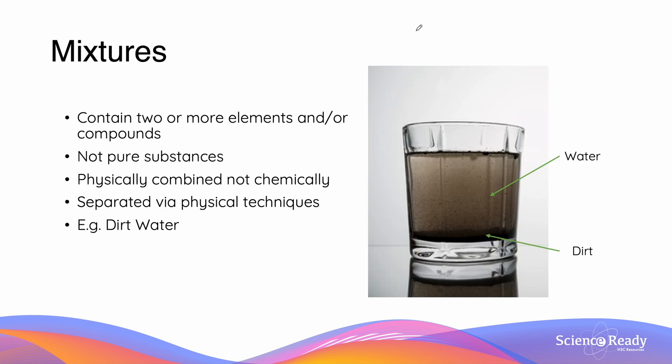Now the last of the three types of substances are mixtures. Mixtures are different from elements and compounds in that they contain two or more elements and or compounds and thus are not pure substances. Another defining feature of the mixtures is that they are only physically combined, they are not chemically combined. And what this means for us is that they can be separated using physical separation techniques. Now one such example is dirt water on the right hand side. And if you look at the mixture you'll notice that there is some dirt that settles to the bottom and there is also this dirt which is suspended in the midst of water.